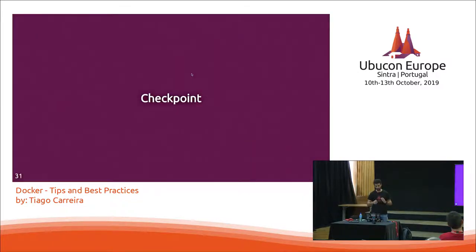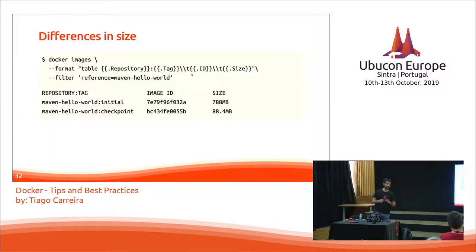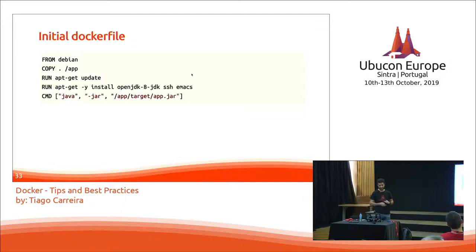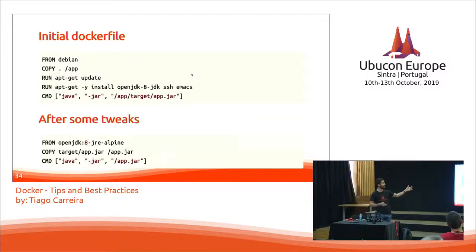Let's make a checkpoint. The difference in size from the first example to the last example was around 700 megabytes — a lot of difference. We started with a bloated Dockerfile and finished with a much simpler and better image with just a few tweaks.